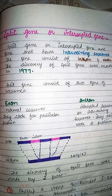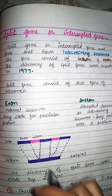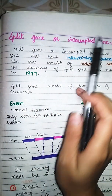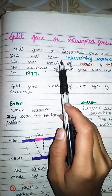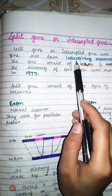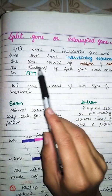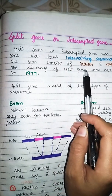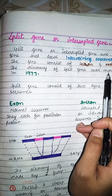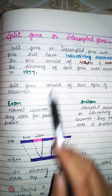Hello everybody and welcome to Biological World. The topic of discussion is split gene or interrupted gene. A split gene or interrupted gene is a gene that has an intervening sequence — the gene consists of introns and exons. The discovery of split genes was made in 1977.